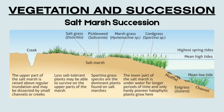Over time, more complex vegetation such as meadow grasses, rushes, and even shrubs colonize the higher areas of the marsh, where conditions are less salty and better drained. These areas are only occasionally flooded. Eventually, if the land continues to build and flooding becomes rare, the marsh may develop into coastal woodland or be reclaimed for agriculture. This final stage is known as the climax community.